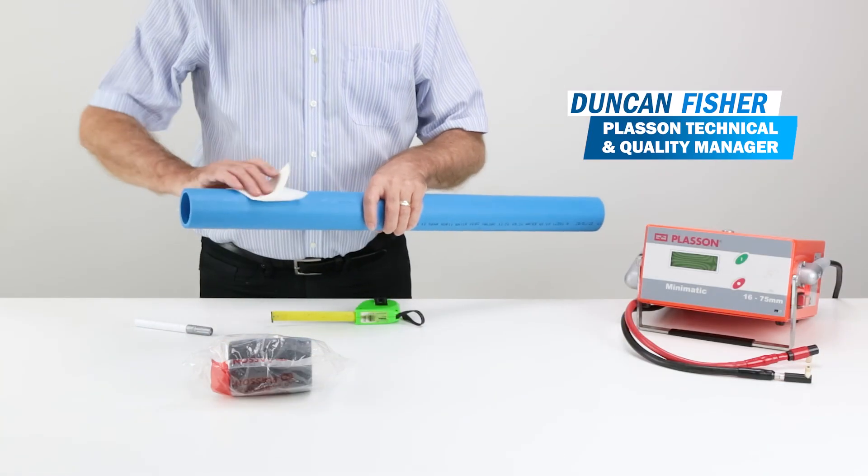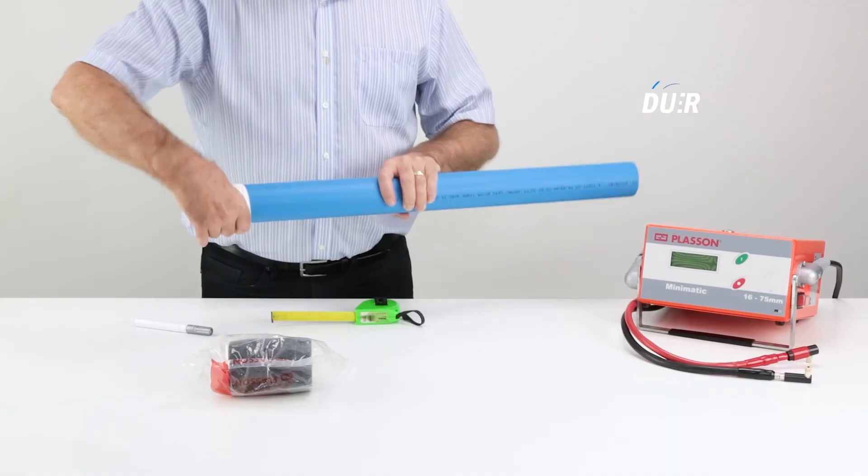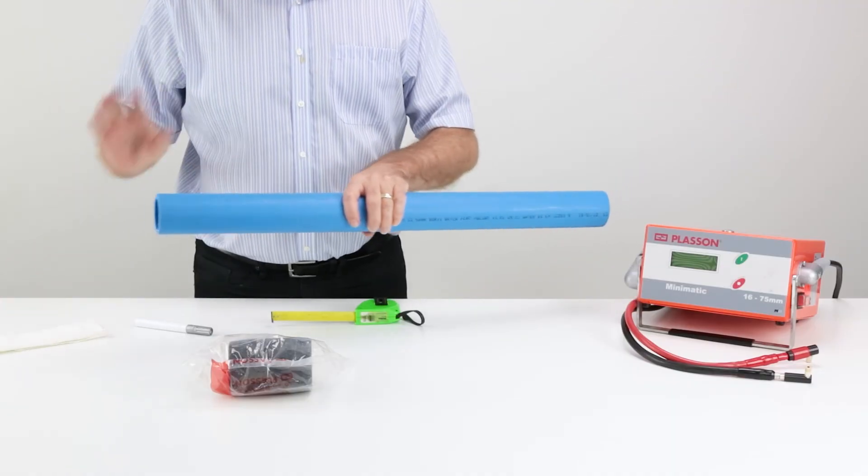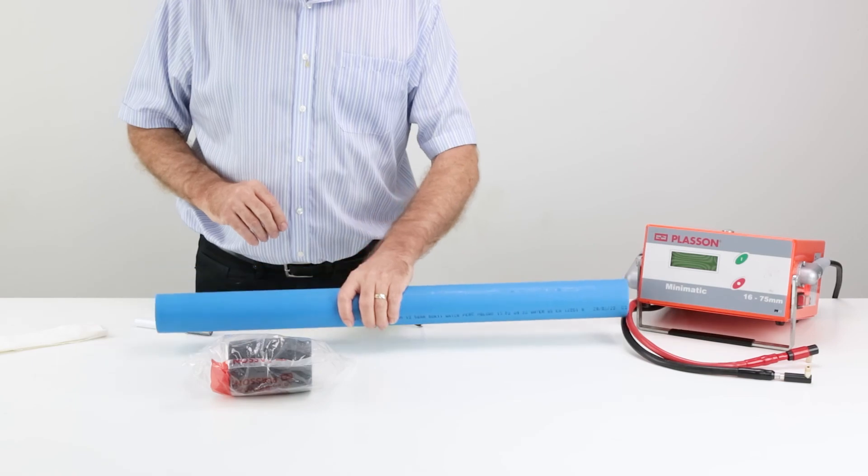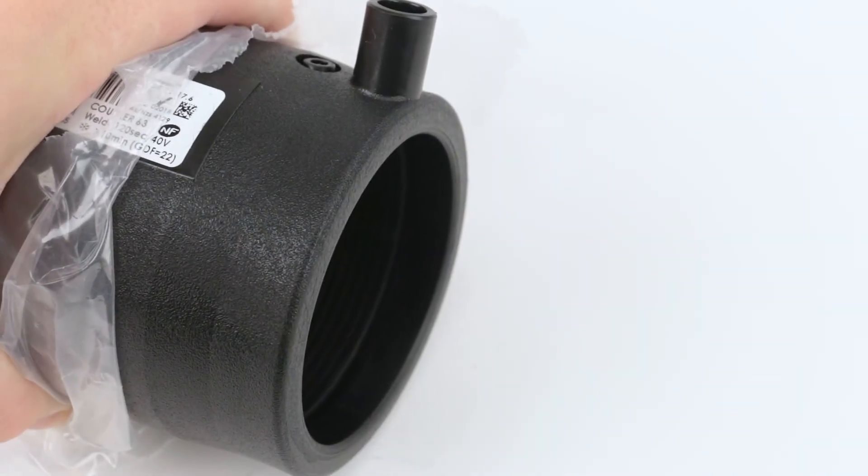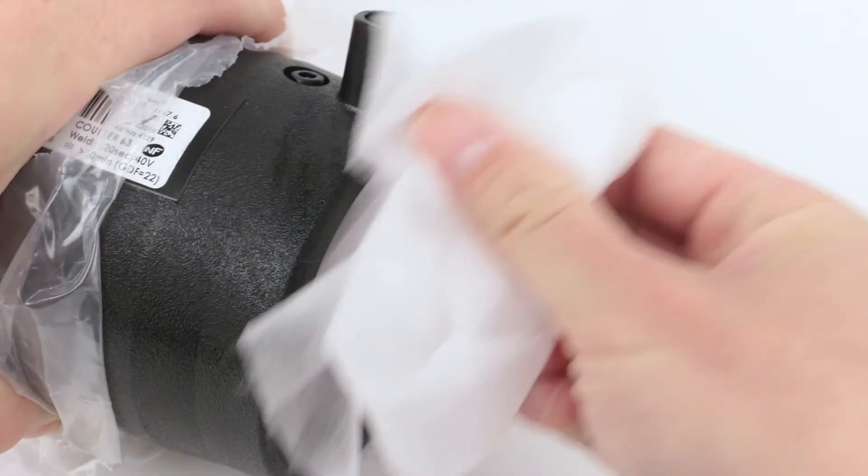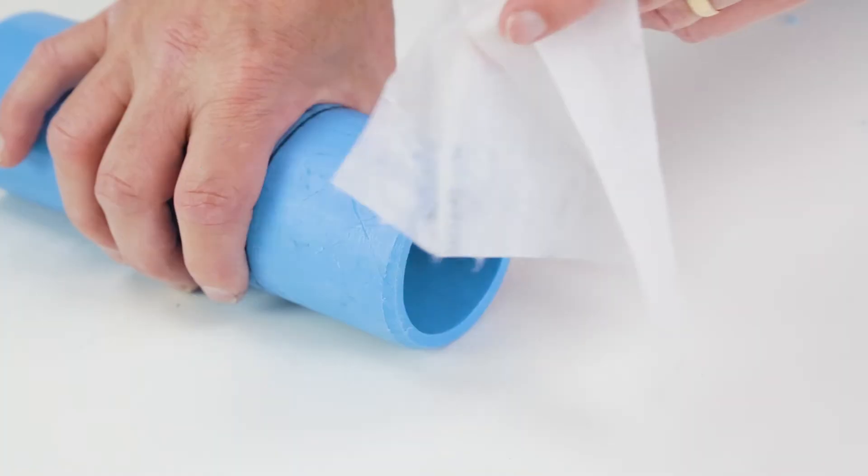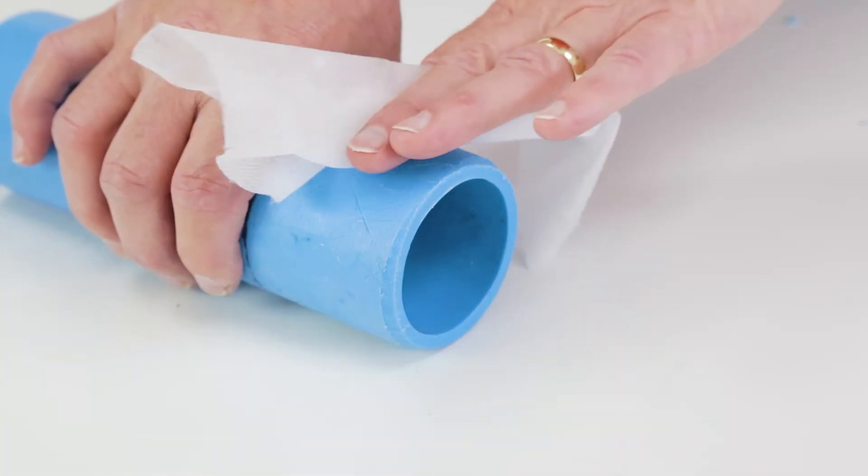So taking your square cut pipe—and it needs to be square cut, so use those pipe cutters—give it a clean to remove any debris or dirt. Throughout the entire process you should be doing this with the degreasing wipes with both the fitting and pipe, as any grease from your fingers can prevent the fitting from welding properly.